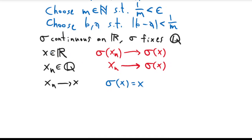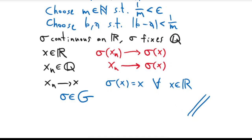Since sigma was just any element of the Galois group G, and we just showed sigma of x equals x for all x in ℝ, sigma is actually the identity. This completes our proof. I think this is a very cool result because ℝ is an infinite-dimensional extension of ℚ — you might imagine the Galois group has all kinds of weird properties and many automorphisms. But it turns out that's not true; the Galois group is just trivial. Anyway, thanks for watching.